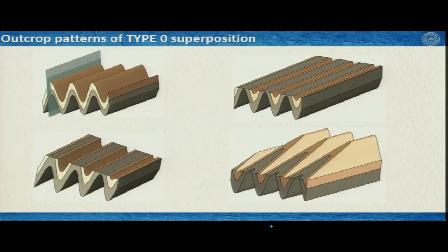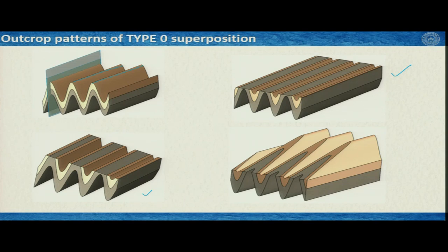For Type 0 fold superposition, the outcrop pattern is redundant: F1 and F2 are parallel to each other, and S1 and S2 are also parallel. On a horizontal section it shows a simple fold pattern; on an inclined section a similar simple pattern. It is difficult to interpret from outcrop alone whether it is Type 0 superposition or a single fold generation.